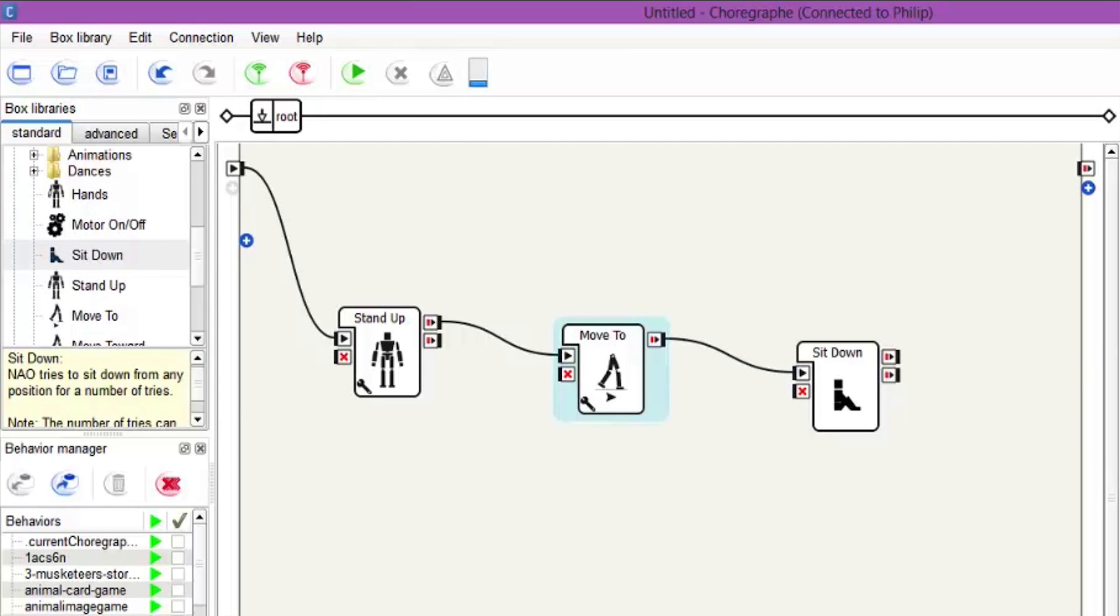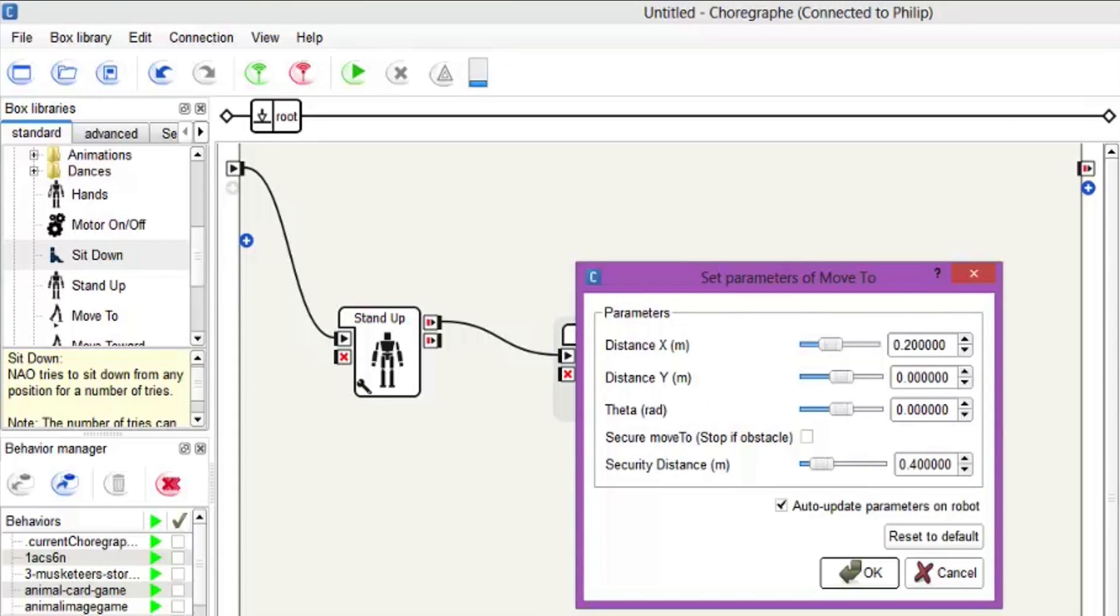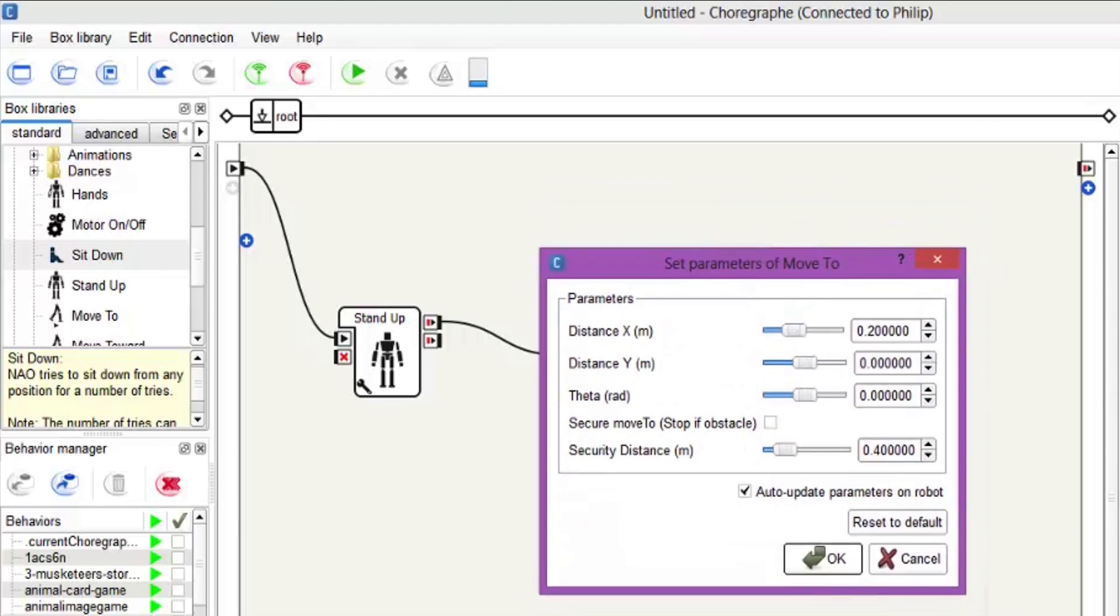When you're in here and you want to change the distance for how far he's going to walk, you simply go to the move to behavior and click on the spanner. Now in the spanner you can see the distances. You can see he's 0.2 at the moment and obviously for X and Y zero and that means he was going to move forward at a distance of 0.2.